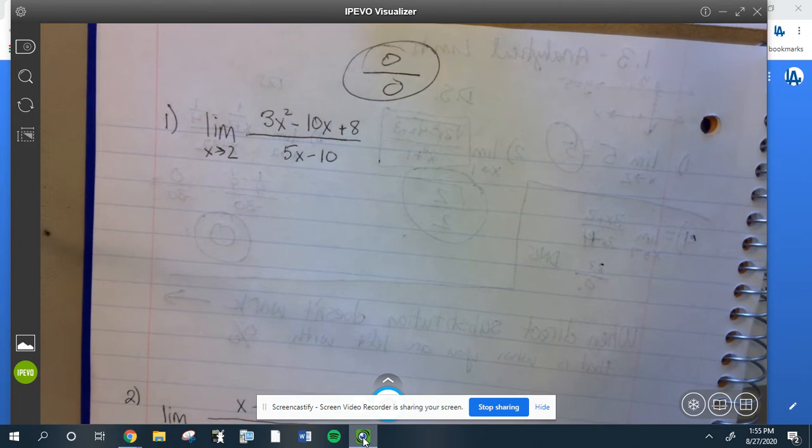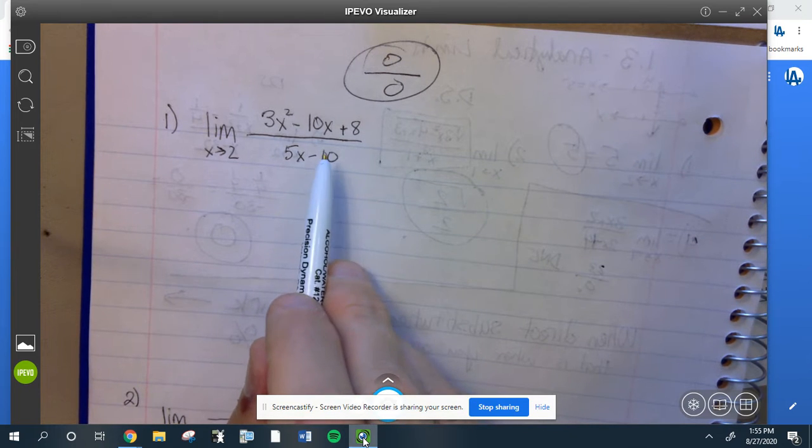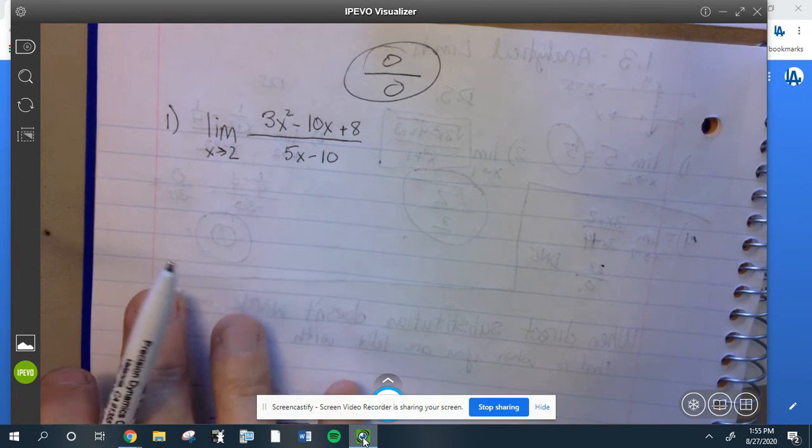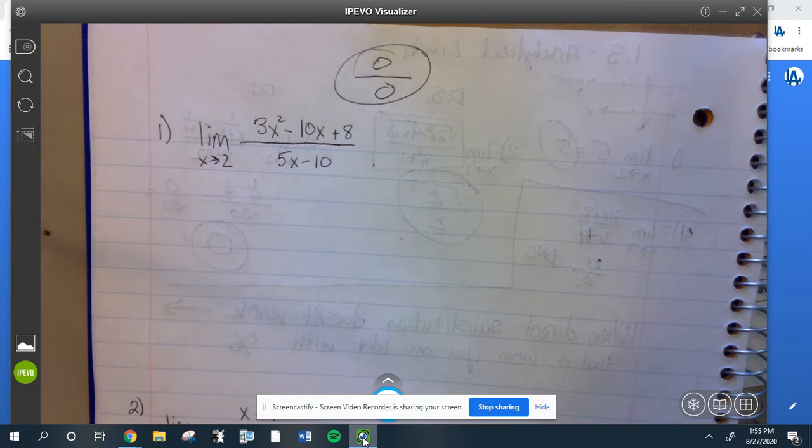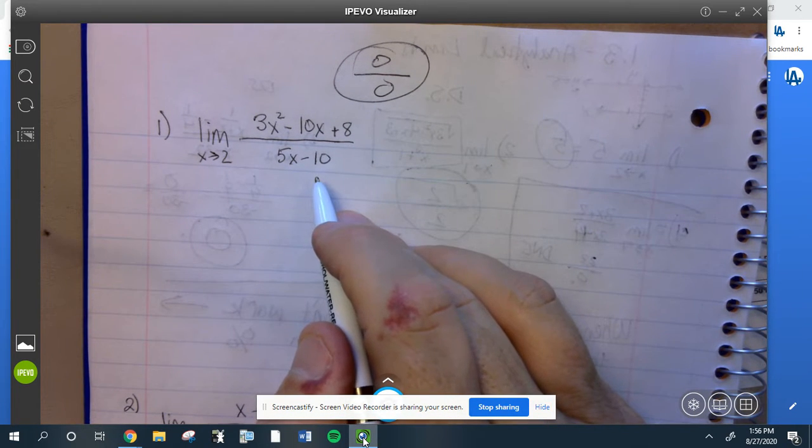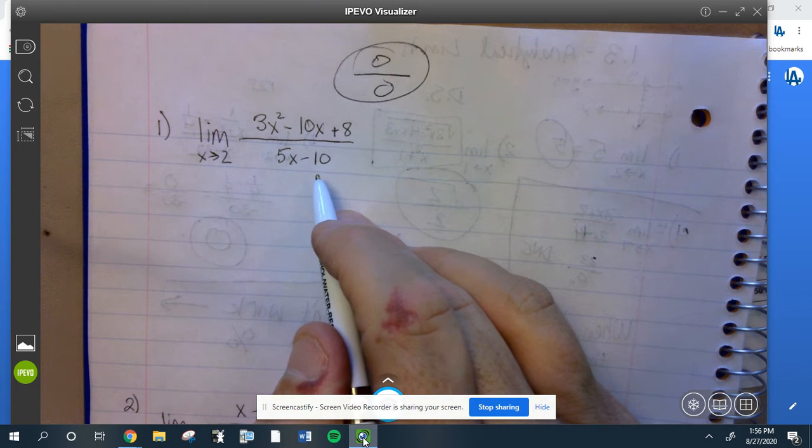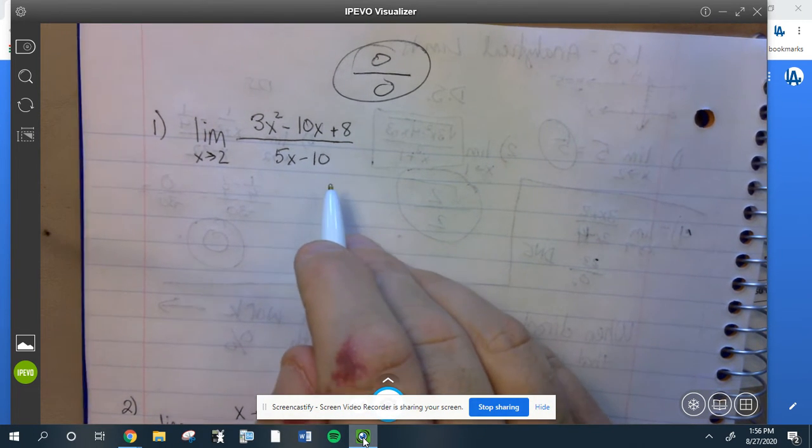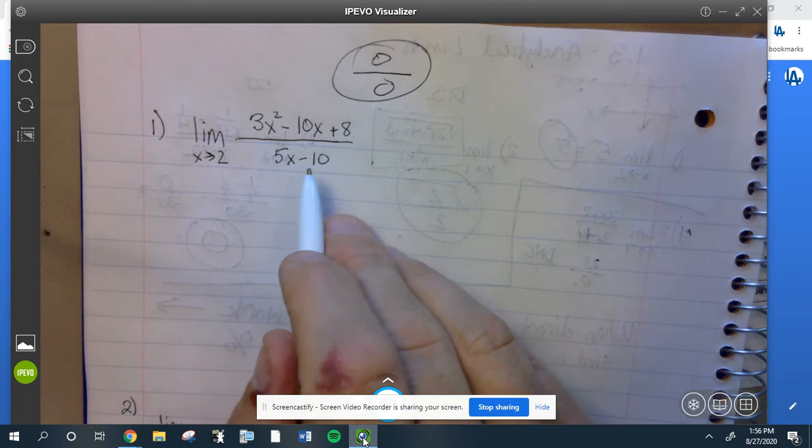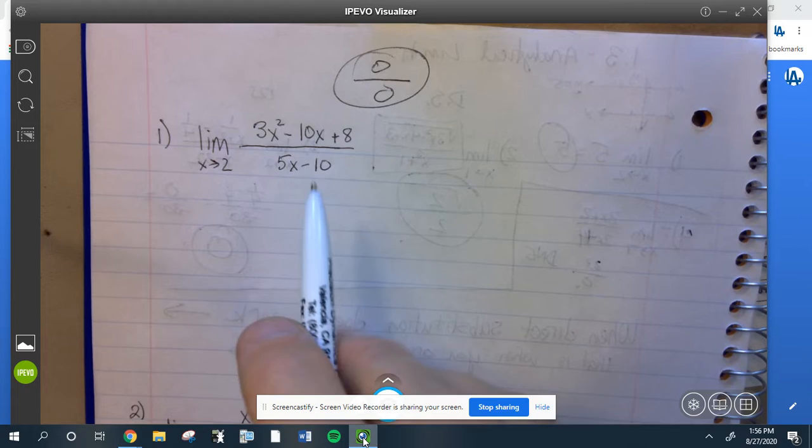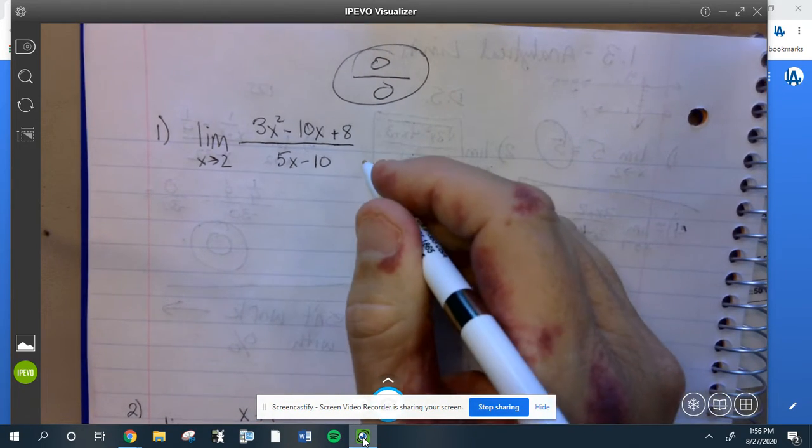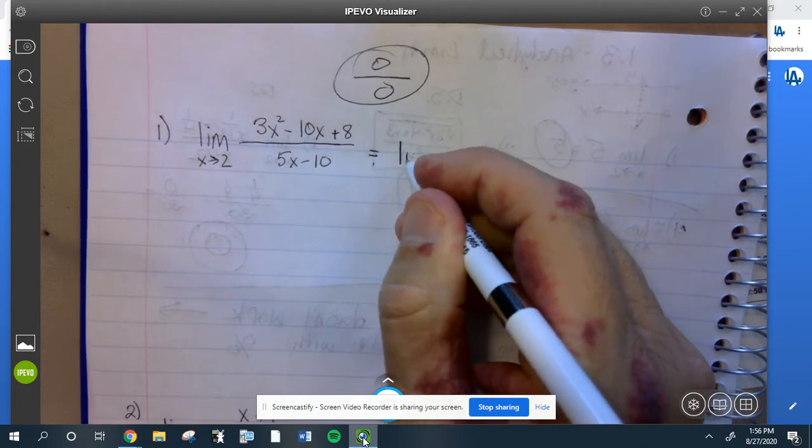Anyhow, since it's a rational function, since the polynomial over a polynomial and you get zero over zero, I guarantee you this factors without a doubt. So this is a problem I just made up, I didn't think this ahead. All I know is it was going to be zero over zero. When that happens, it's a guarantee that both of these factor or one of them factors and you get a cancellation.